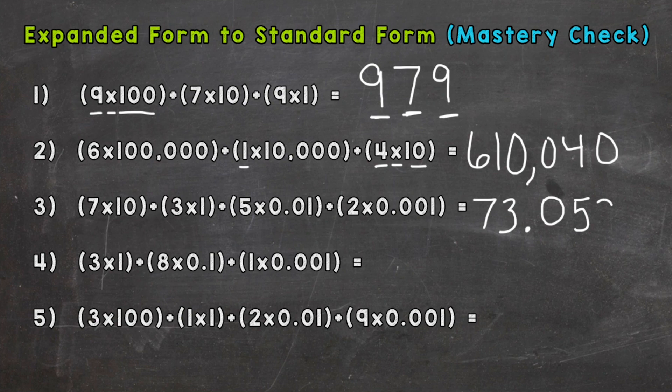Number four, we start with a three in the ones place and a decimal, and eight in the tenths. We do not have any hundredths, and then a one in the thousandths. So three and eight hundred one thousandths.